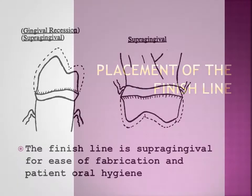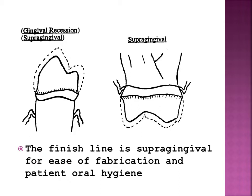Preparation trauma and irritation to the soft tissues can be avoided by locating the finish lines of crown preparations at or occlusal to the crest of the gingiva — supragingival. This location of the gingival finish lines also facilitates preparation of the finish lines, making impressions, and final adaptation of the restoration.